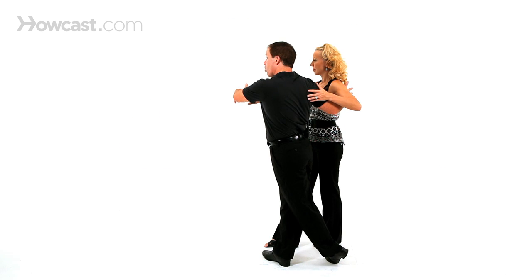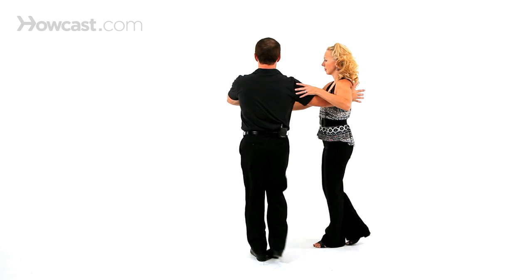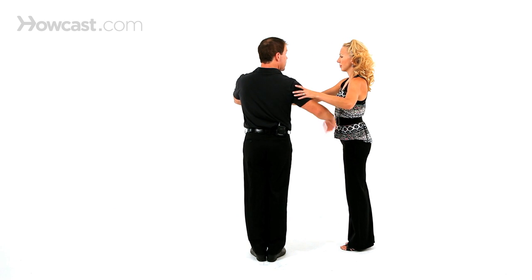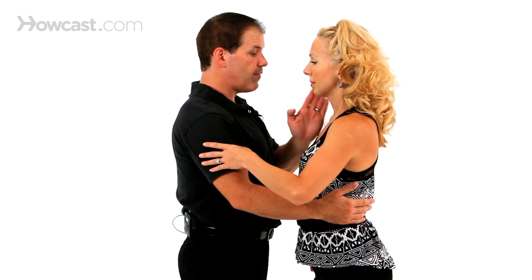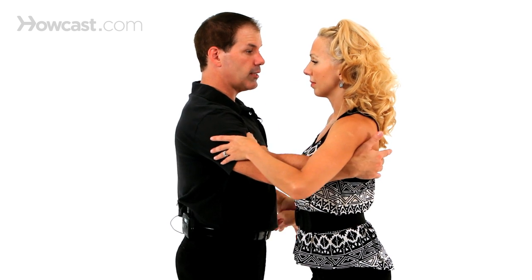On three and four, I'm going to take three and right in place. Three and, so I'm 90 degrees to the lady. Four, I step across. Now we're offset of each other, her shoulder's in the middle of my chest, that's four.